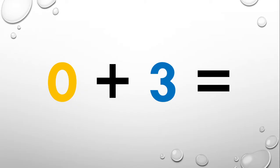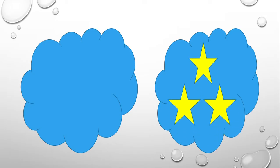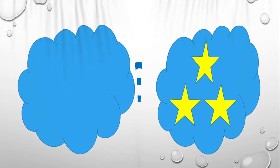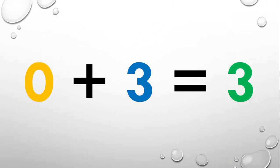Now what about zero plus three? Do you know what zero plus three equals? Well, let's find out. There are zero stars on the first cloud and three stars — one, two, three — on the second cloud. Let's count all the stars from both clouds: there are only three. So that means that zero plus three equals three.